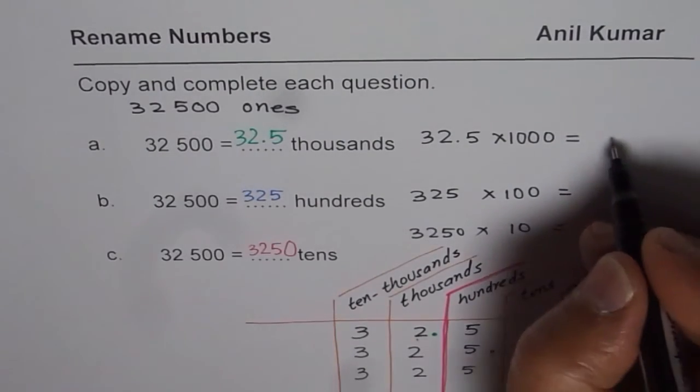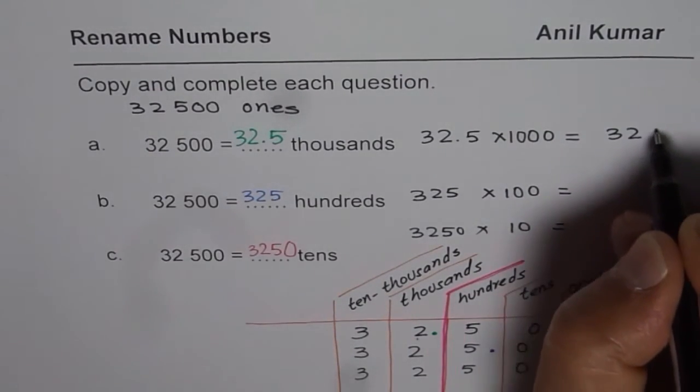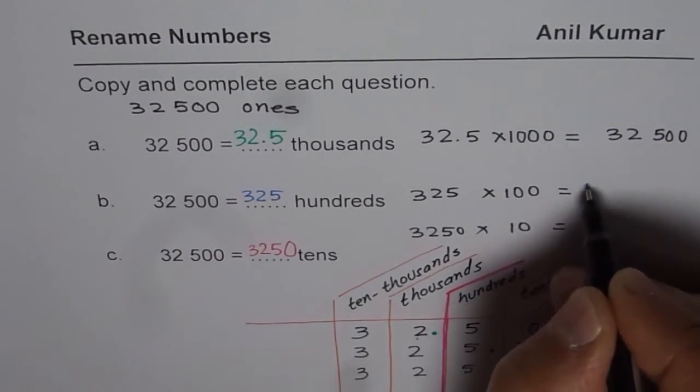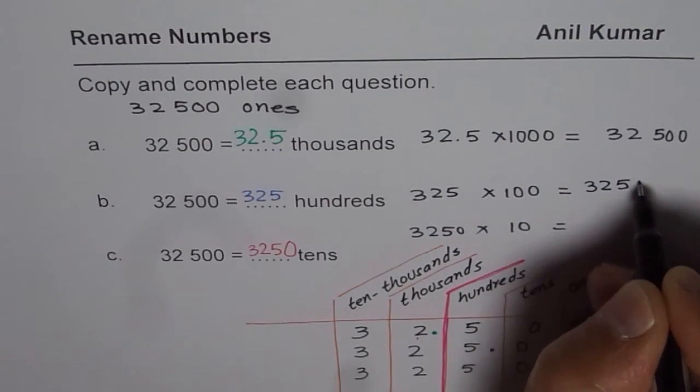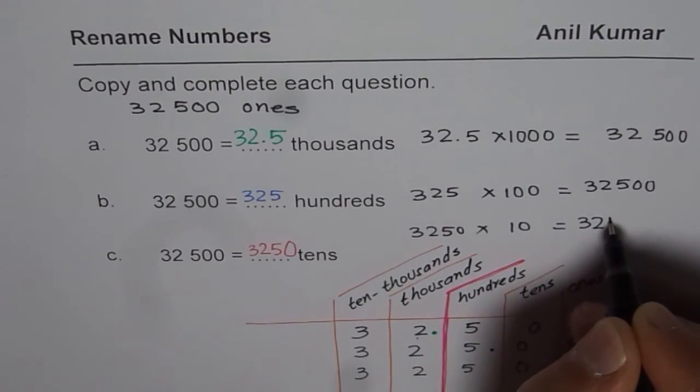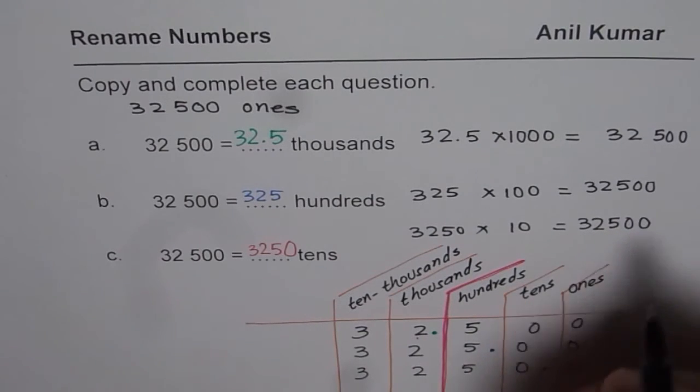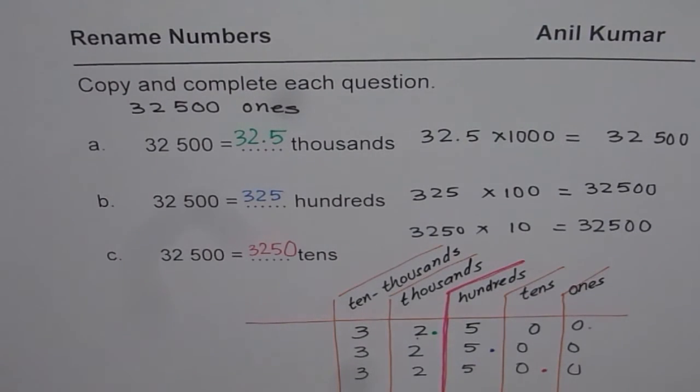In each case, you will get your number 32,500. So you get 32,500. So it is the same number, 32,500, which is written in different ways as thousands, hundreds, and tens. And that is why we call it renamed numbers.